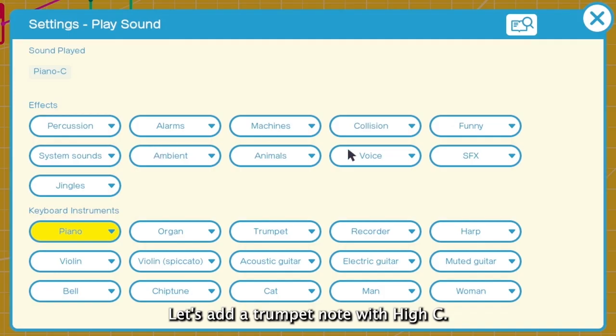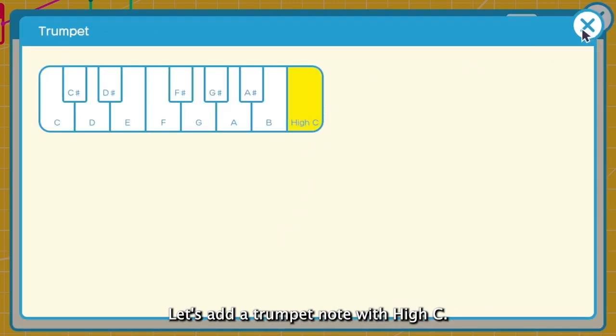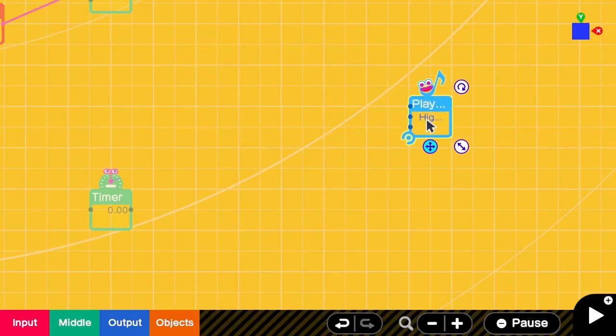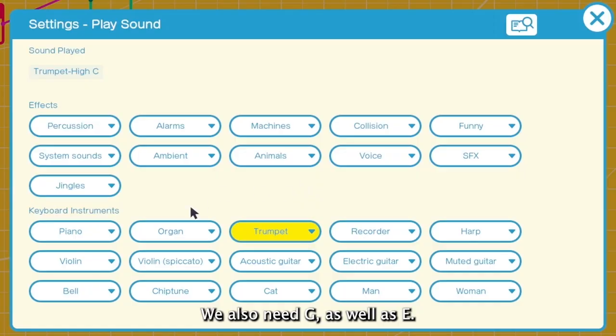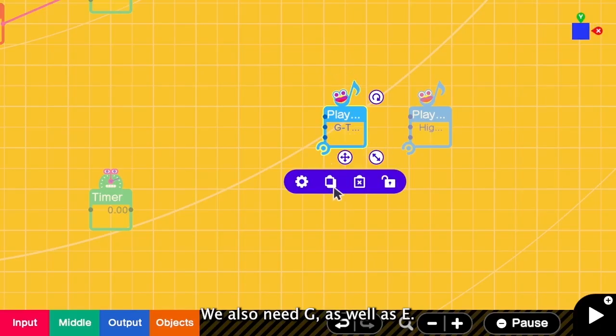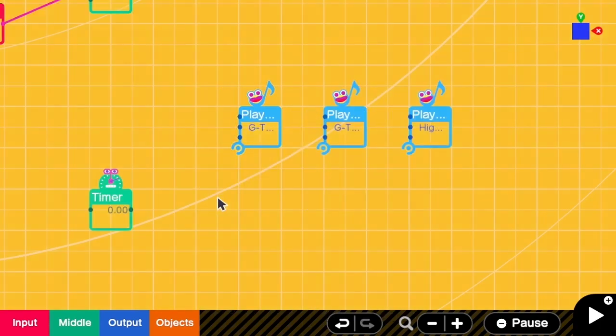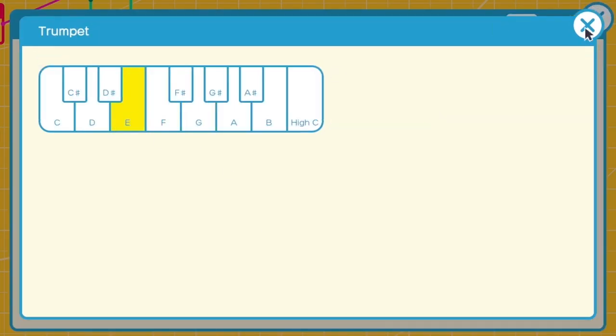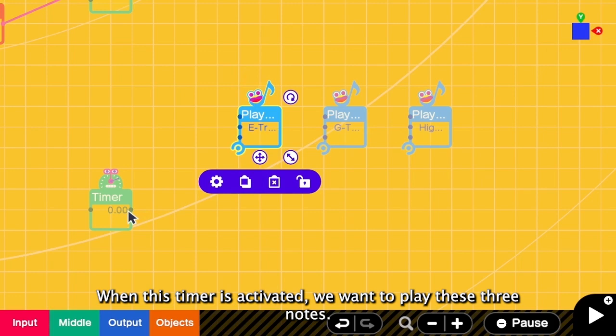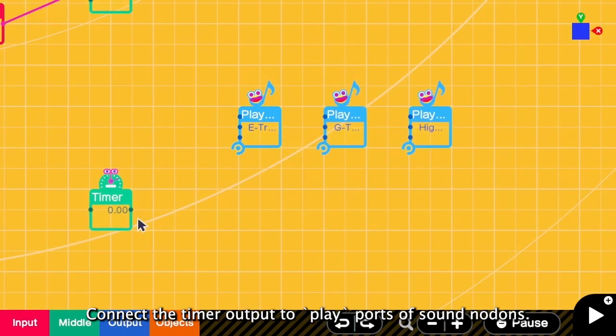So here is the high C. Let's select a trumpet with high C. And then we also need G, as well as E. When this timer is activated, we want to play these three notes. So we connect the output of the timer to the input of the music notes.